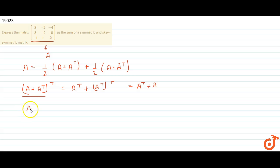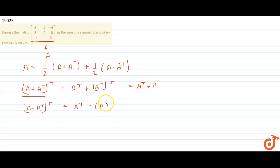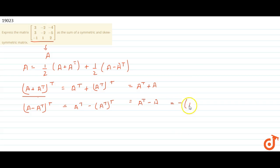Now consider (A - Aᵀ)ᵀ, which is equal to Aᵀ - (Aᵀ)ᵀ, which is equal to Aᵀ - A, and this is equal to minus (A - Aᵀ). So we see that A - Aᵀ is a skew-symmetric matrix.